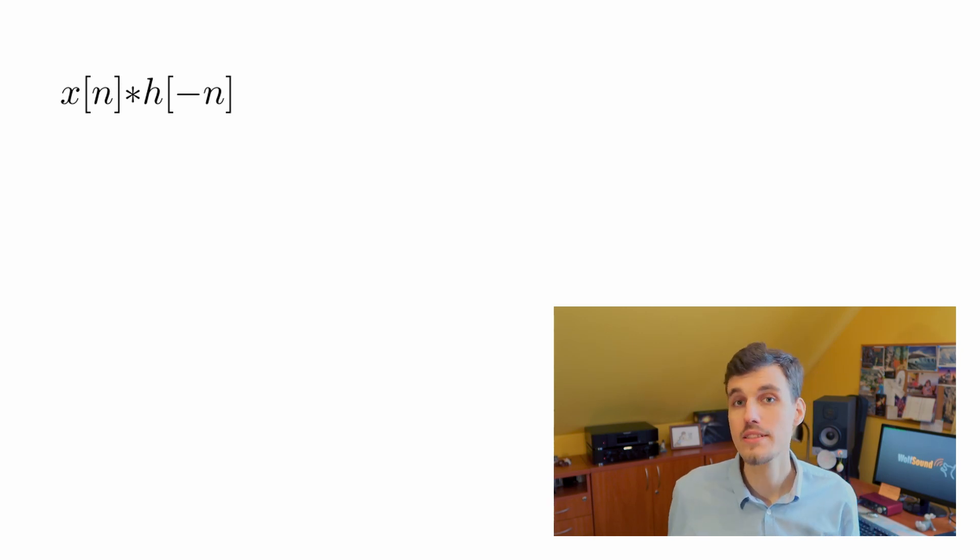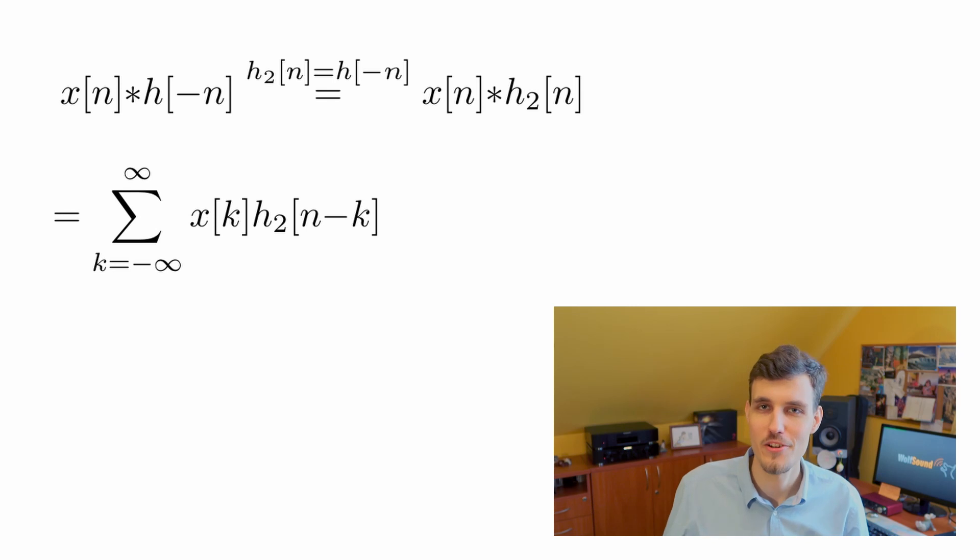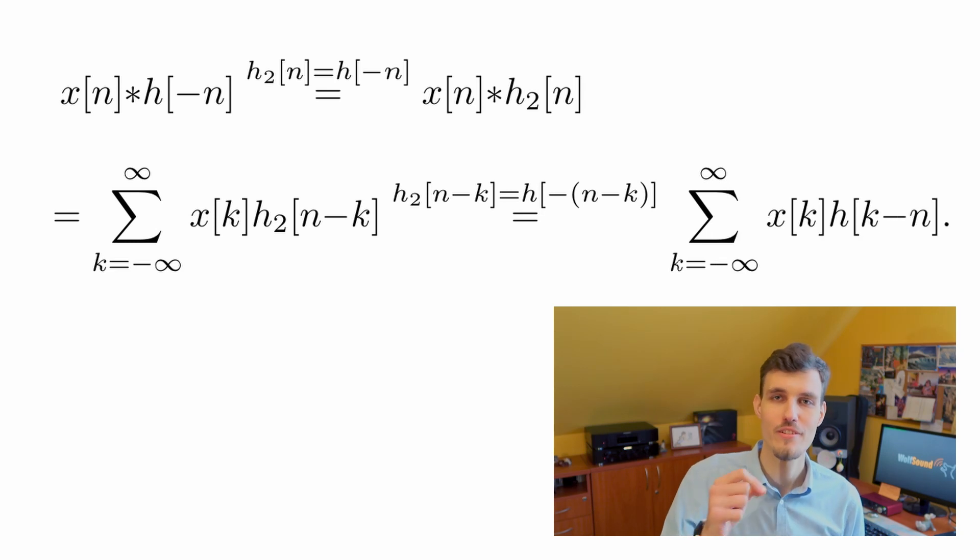Again, let's define a helper function. Now let's call it h_2. This h_2 can be directly substituted into the star notation. Then we can expand the star notation again according to its definition and then substitute the original function.